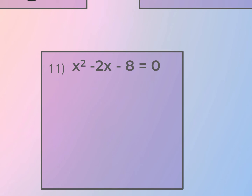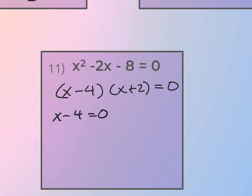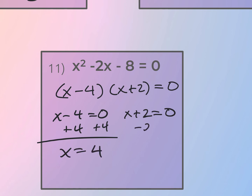We did a similar problem with number four, but now the signs are different — the middle term is negative. So be careful and watch your signs. This factors into (x − 4)(x + 2) = 0, because factors of −8 that give −2 are −4 and +2. Solutions: x = 4 and x = −2.